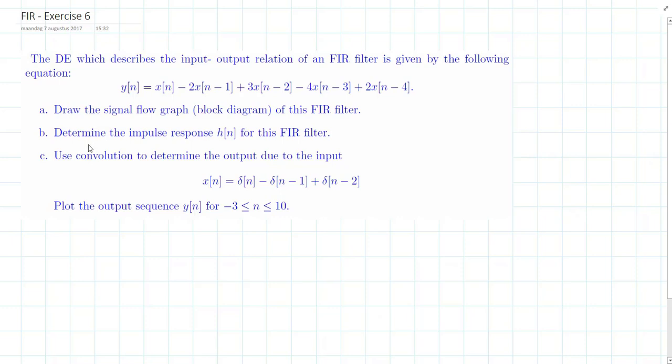Welcome to the pencast video of exercise 6 of the module FIR filters. The difference equation which describes the input-output relation of an FIR filter is given by: y[n] = x[n] - 2x[n-1] + 3x[n-2] - 4x[n-3] + 2x[n-4].